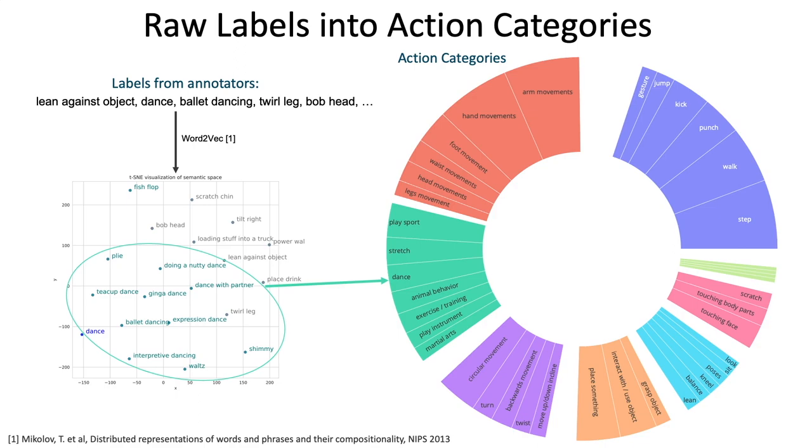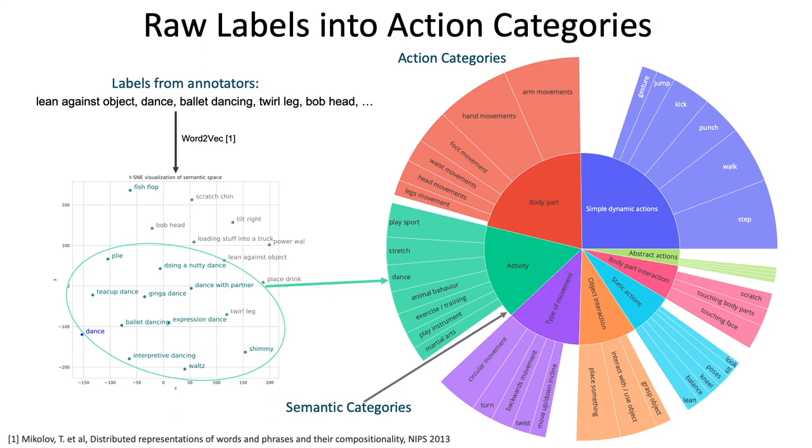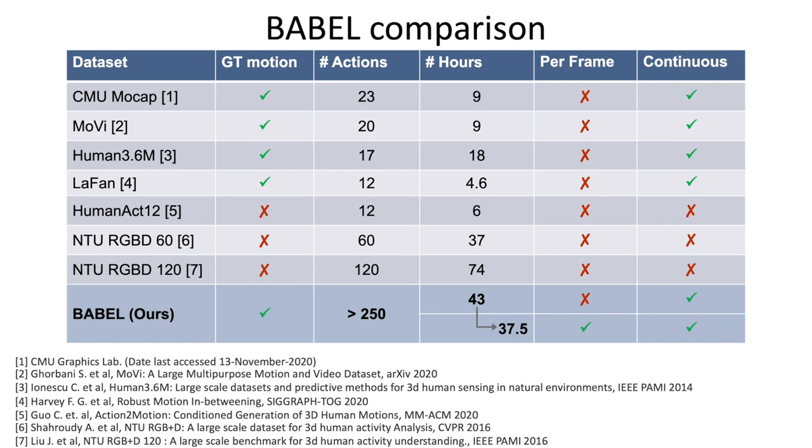We further observe that action categories belong to distinct semantic categories that represent qualitatively different types of actions. Overall, there are 256 action categories in Babel. This is about an order of magnitude larger than existing datasets with ground-truth 3D movement data.